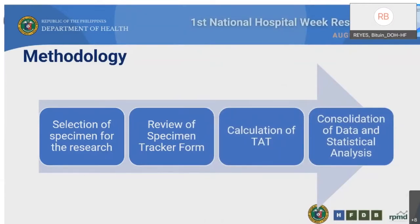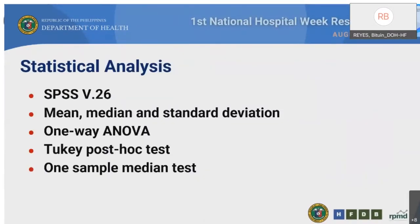The following statistical methods were used: SPSS version 26; mean, median, and standard deviation to determine the TAT for surgical specimens; one-way ANOVA to determine if there were significant differences in mean TAT based on specimen type and number of special procedures performed; two post-hoc tests to determine which specimen types and number of procedures had significant differences in mean TAT; and one-sample median test to compare BATMC TAT with the Q-probe benchmark values.